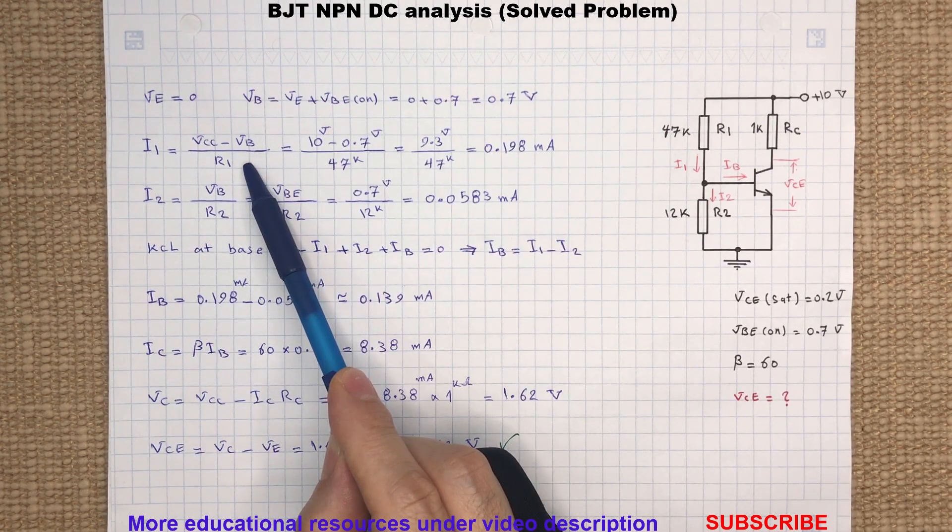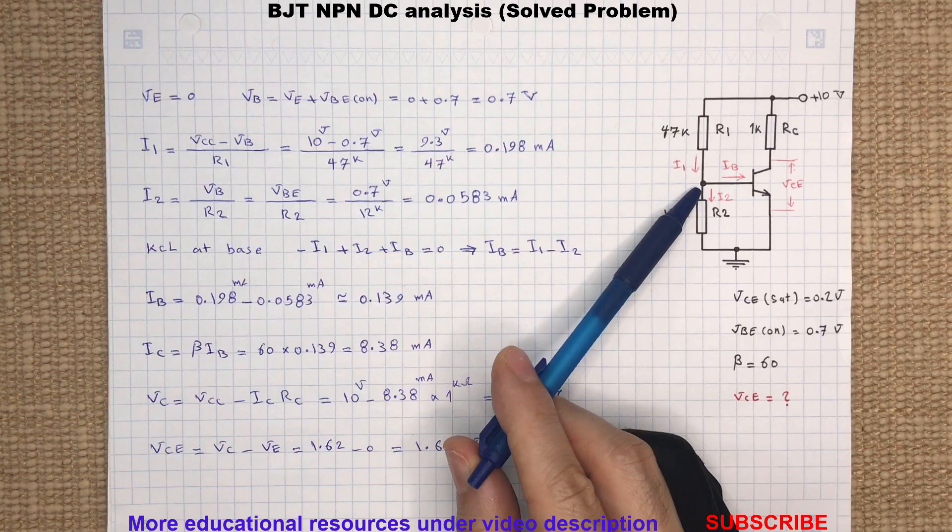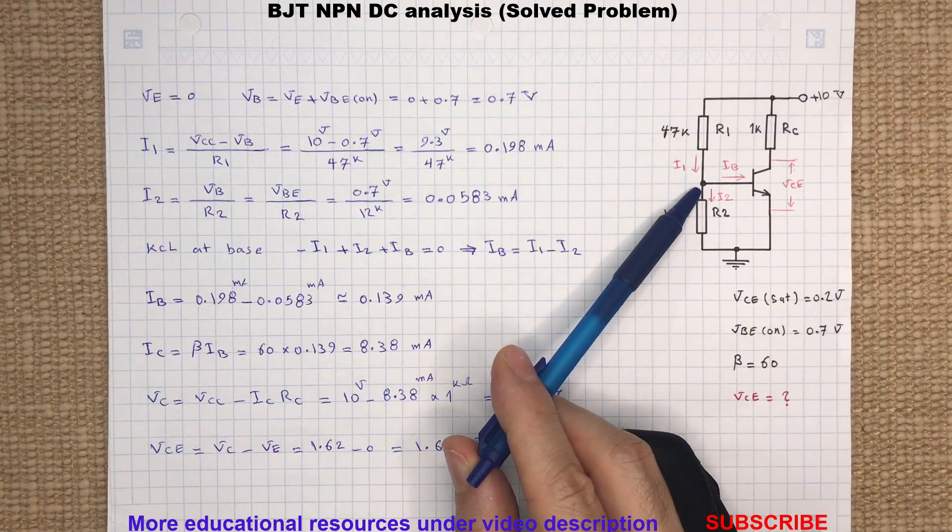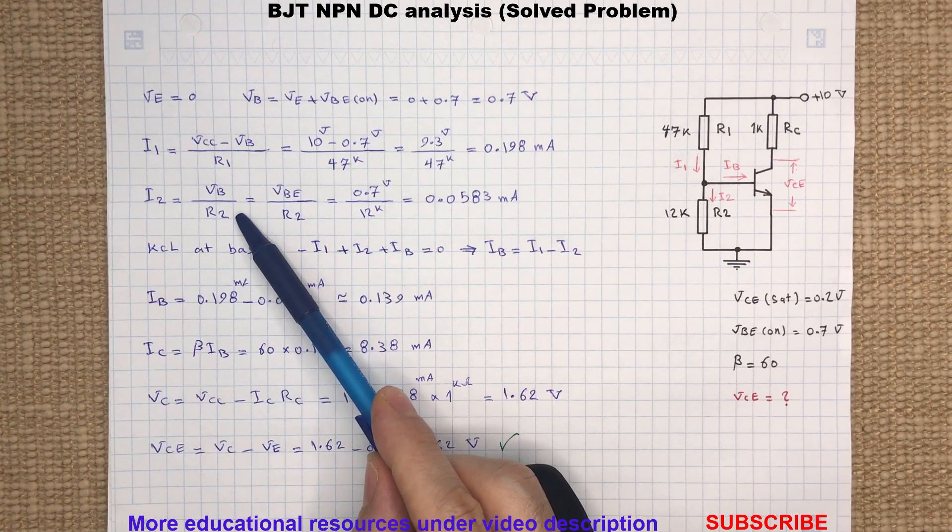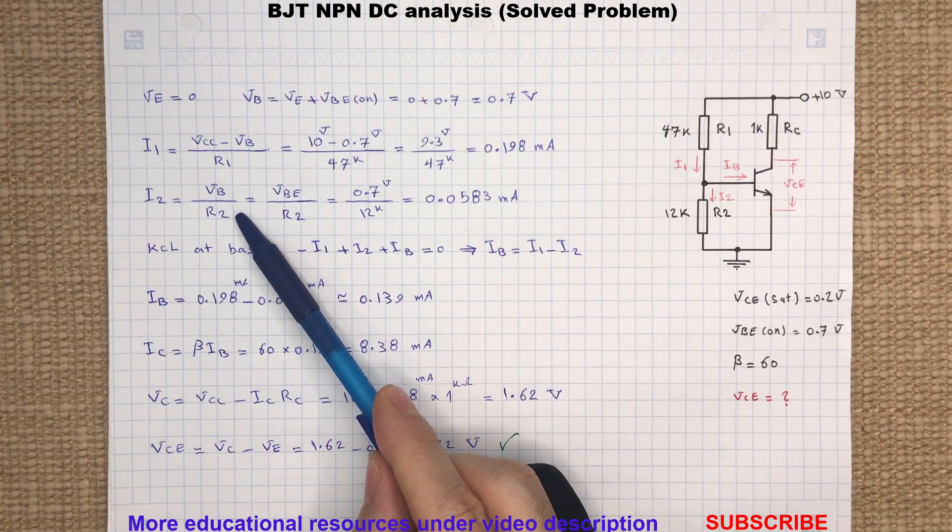I1 will be the voltage drop across R1 divided by R1. As you can see here, the voltage at the base node is the same as the voltage across resistor R2, so the current flowing through this resistor will be the base voltage divided by R2.